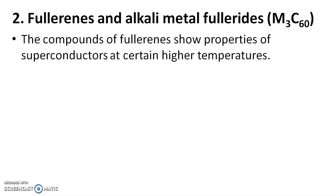Not only fullerene but also the compounds of fullerene, called fullerides, show superconducting properties. The C60 molecule of fullerene has a face-centered cubic structure with a lattice constant equal to 14.2 Angstroms. Since the radius of the molecule is 3.54 Angstroms, this leaves large vacancies which are enough to accommodate dopant metal ions having small radii.